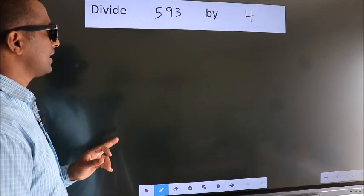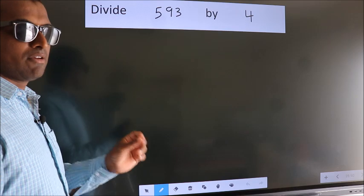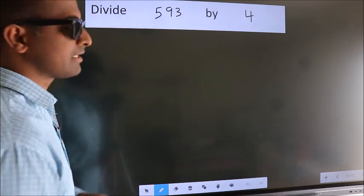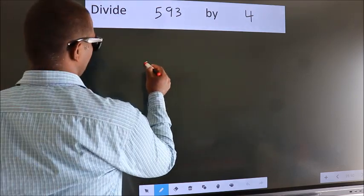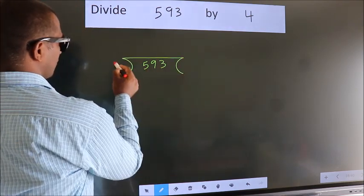Divide 593 by 4. To do this division, we should frame it in this way. 593 here, 4 here.